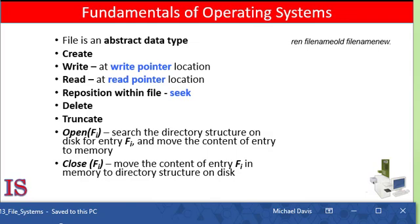To read from a file, we use a system call that specifies the file handle and where in memory the next block of the file should be put. The directory is searched for the associated entry and the system needs to keep a pointer to the location in the file where the next read is to take place if sequential. Once the read has been completed, the read pointer is updated. Because a process is usually either reading from or writing to a file, the current operation location can be kept as a per-process current file position pointer. Both the read and write operations use the same pointer, saving space and reducing system complexity.